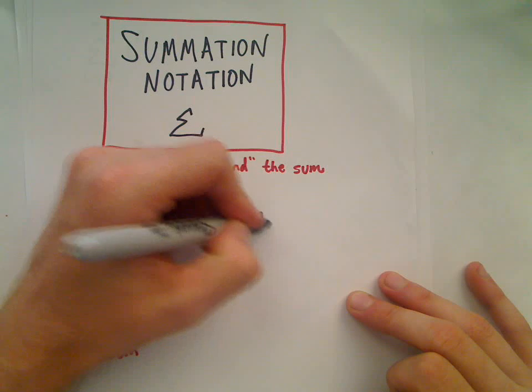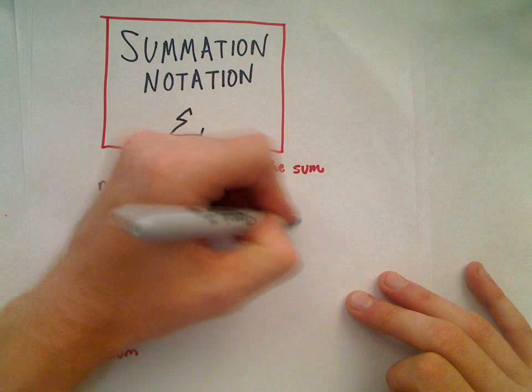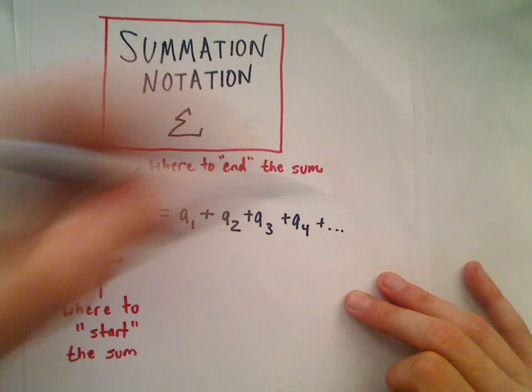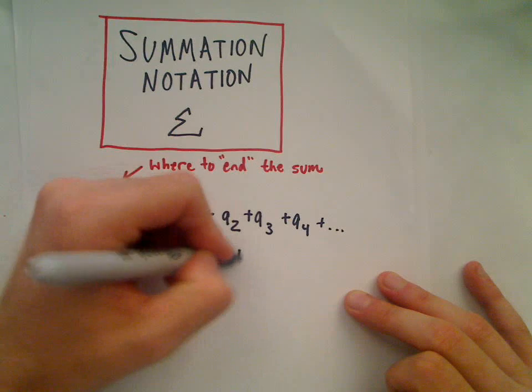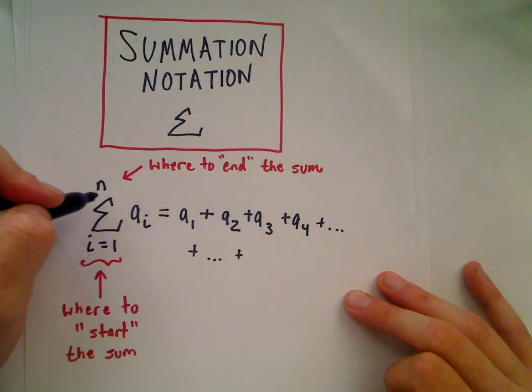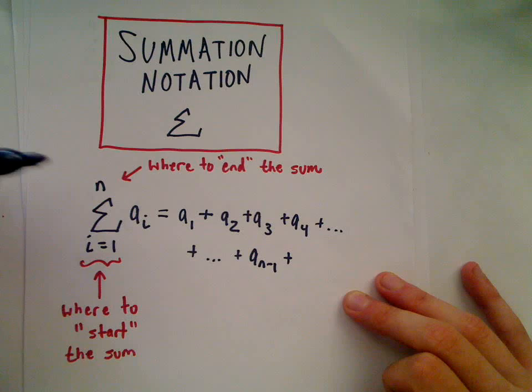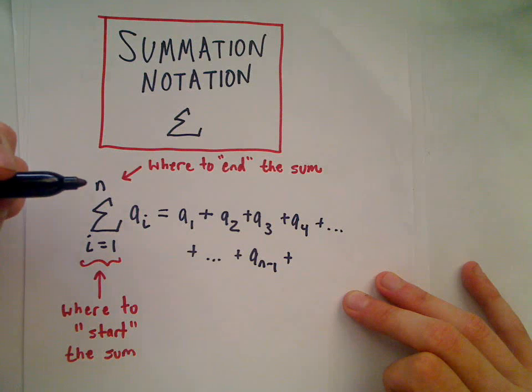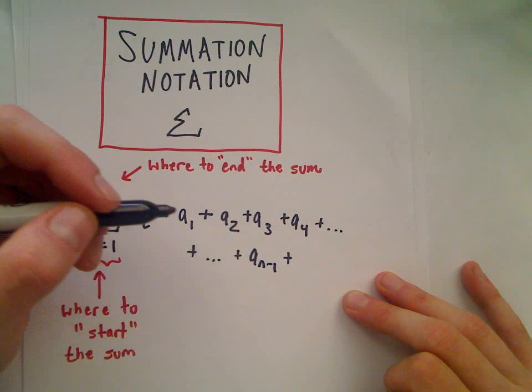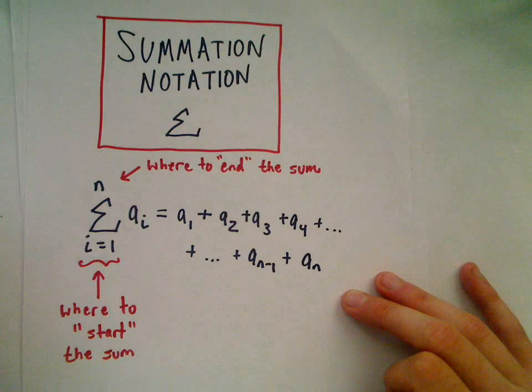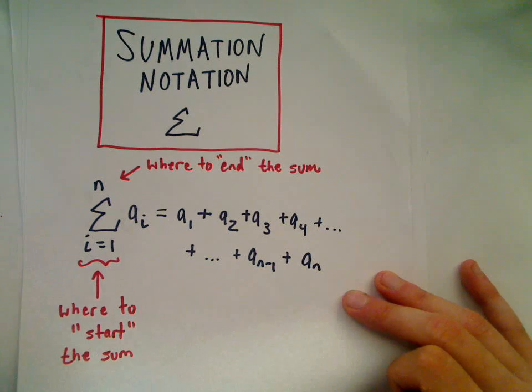So we would get the term a sub 2, and then a sub 3, a sub 4, and we would keep going until the stopping point of n. The second to last term would be a sub n minus 1, and the last one would be just a sub n. Okay, so let's see if we can make some sense out of this with some numerical examples.